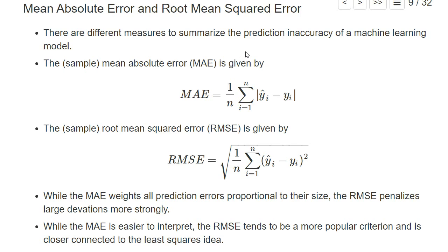There are two popular measures to summarize the prediction inaccuracy of a machine learning model. The first is the mean absolute error.